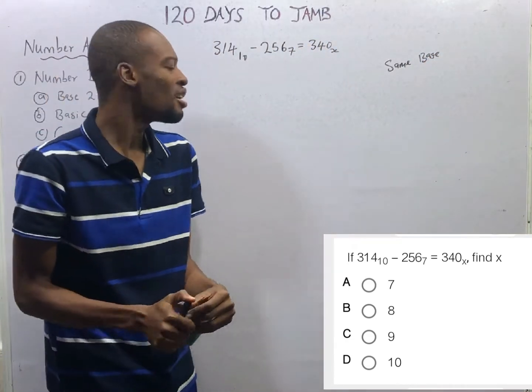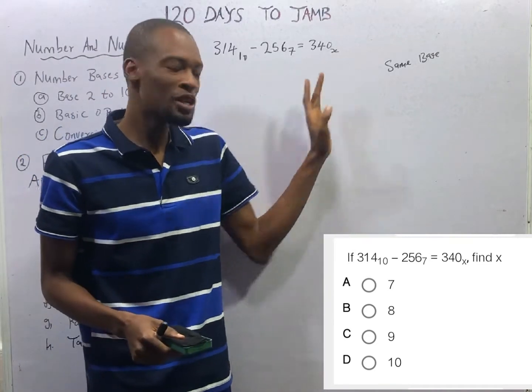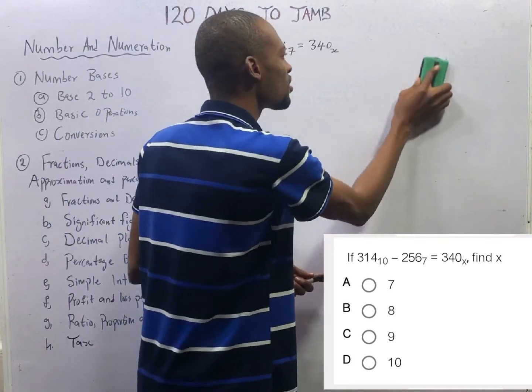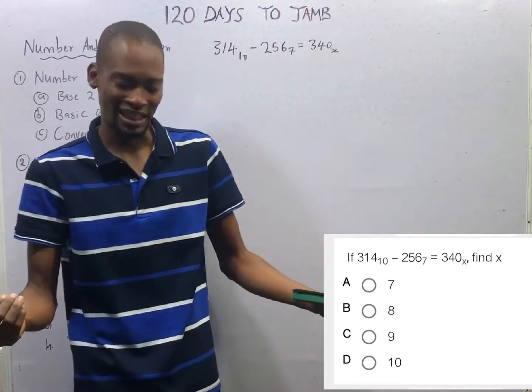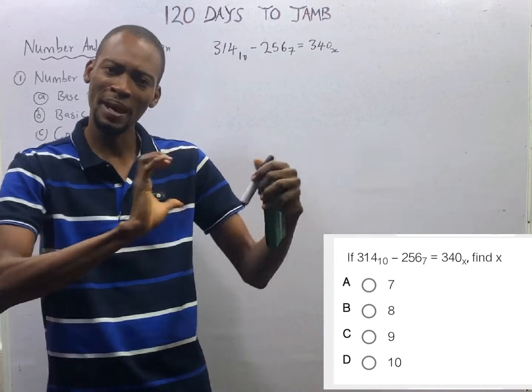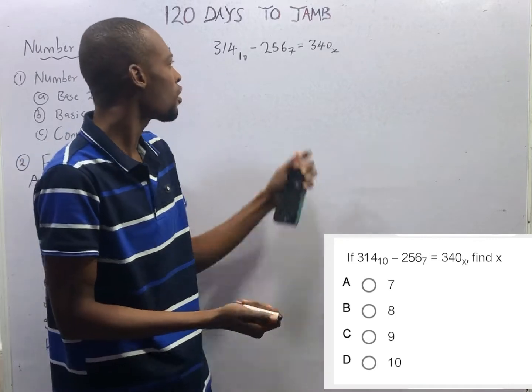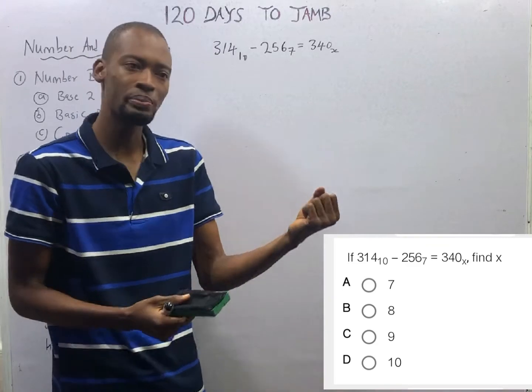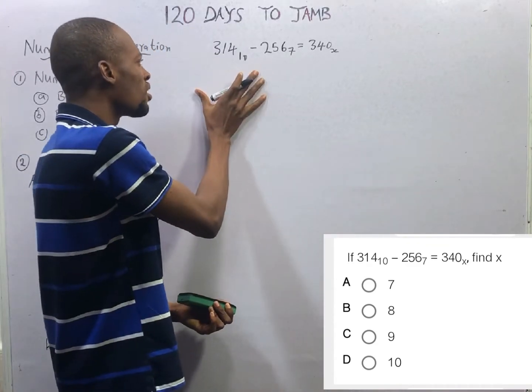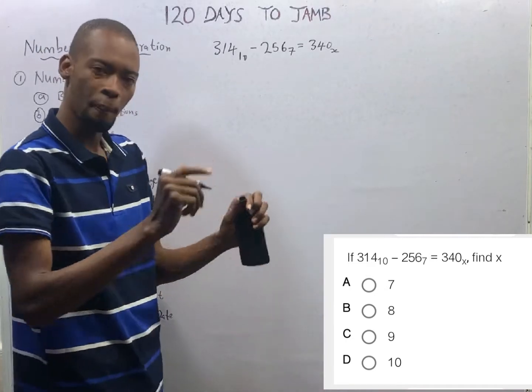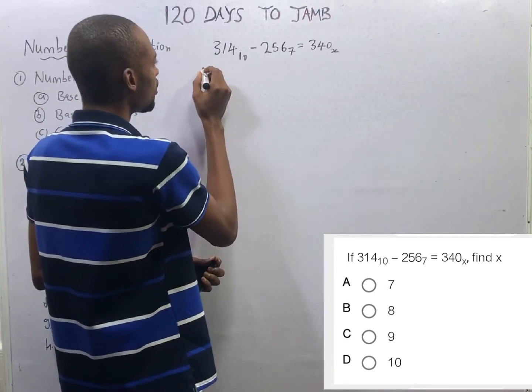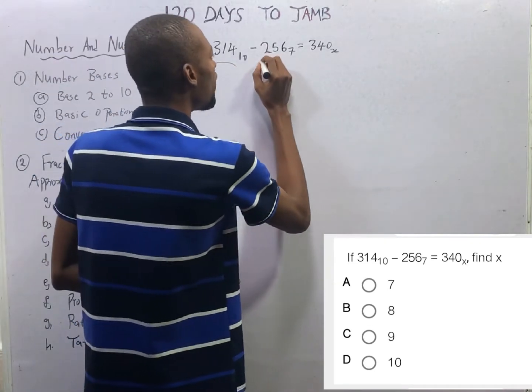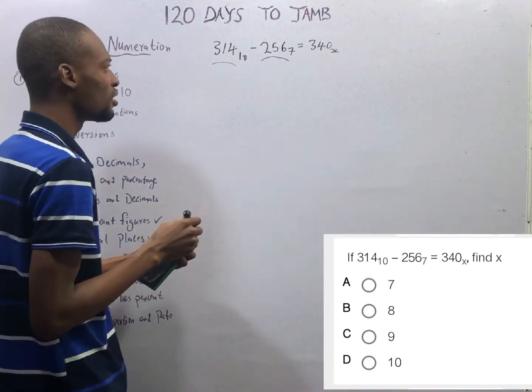Which implies that before we begin operations on these numbers, we need to convert all of them to the same base. And the easiest base to work with is the base 10. We are already used to base 10. Our normal counting system is in base 10. We therefore convert all of the numbers to base 10 so that they will be in the same base. 314 is already in base 10, so we need not bother. We simply say this is already in base 10, just forget about it.